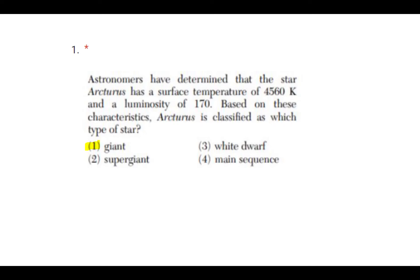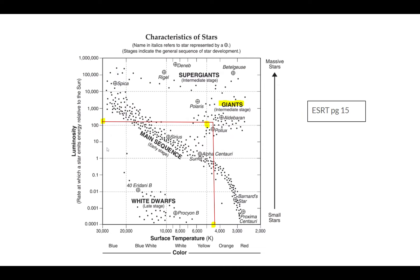Number one asks: astronomers have determined that the star Arcturus has a surface temperature of 4560 Kelvin and a luminosity of 170. Based on these characteristics, Arcturus is classified as which type of star? The correct answer is number one, giant.